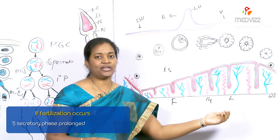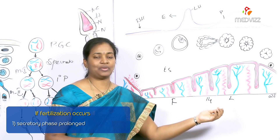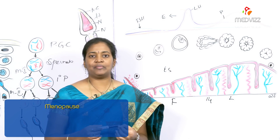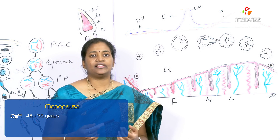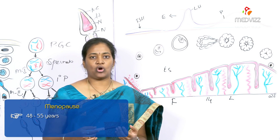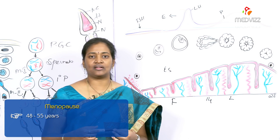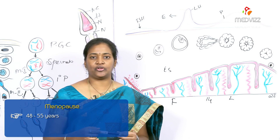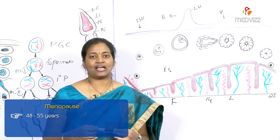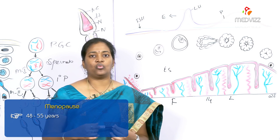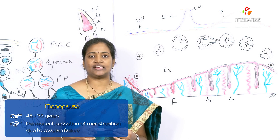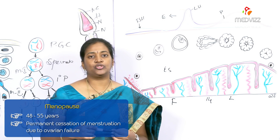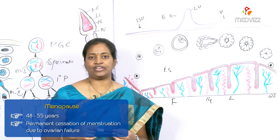If fertilization occurs, the secretory phase is prolonged and the endometrium is prepared for implantation of the embryo. Finally, menopause usually occurs between the ages of 48 to 55 years. The endocrine, somatic, and psychological changes that occur at the termination of the reproductive period are called the climacteric phase. The ovarian cycles terminate at menopause, with permanent cessation of menstruation due to failure of the ovary to release oocytes.